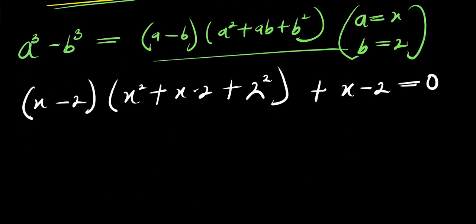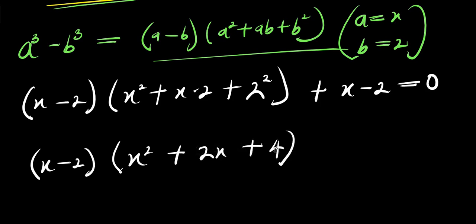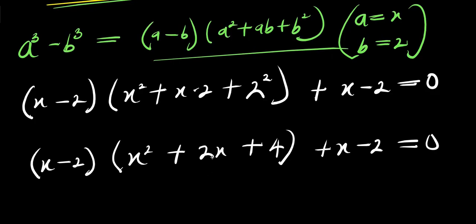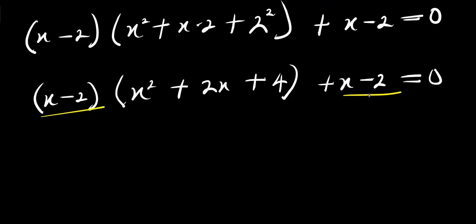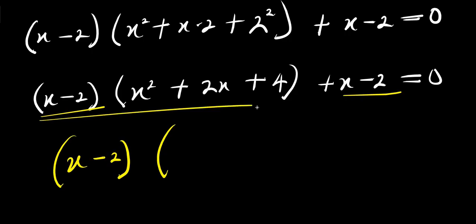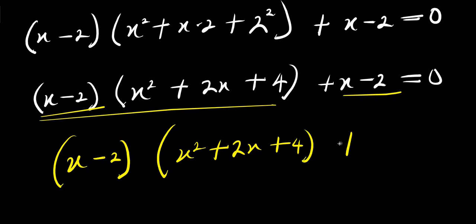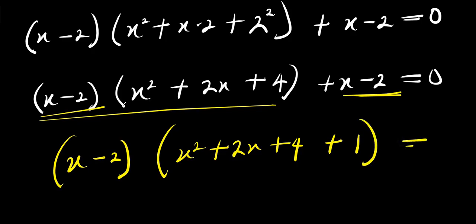From here I will have x minus 2 times x squared plus 2x plus 4, and this is plus x minus 2 equals 0. So right now there is x minus 2 and there is x minus 2; I can factor that out. Of x minus 2, dividing through: I have x squared plus 2x plus 4, then plus 1, and this equals 0.